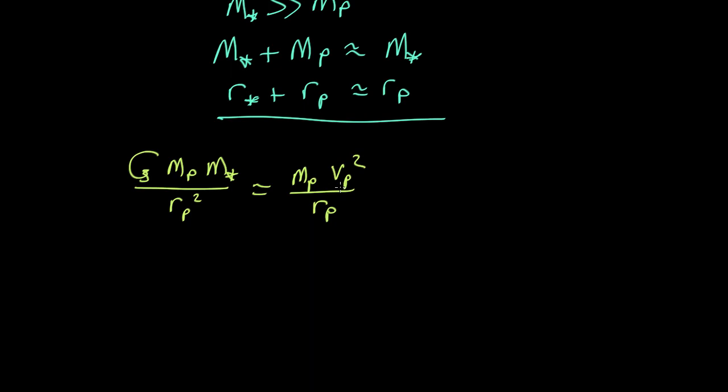So we can cancel a bunch of stuff. The mass of the planet cancels. We can bring r p up to the side of the equation and we end up with r p equals G m star over v planet squared.